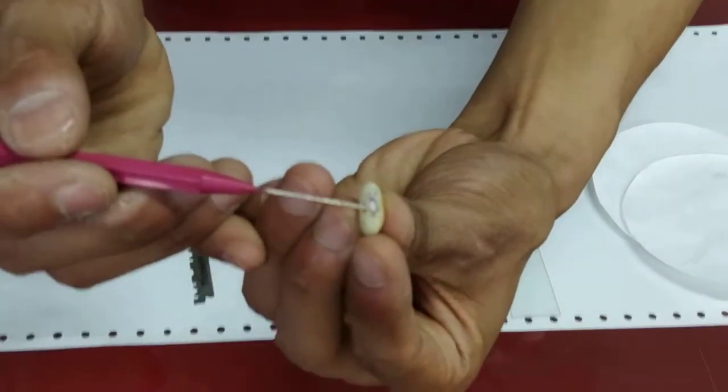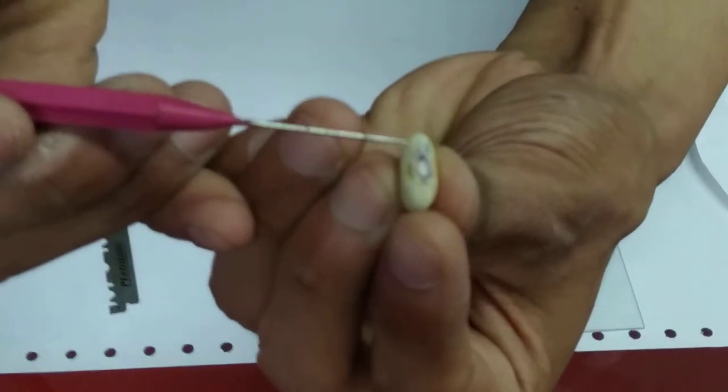This white scar represents the hilum, and just below it you will see a micropyle.